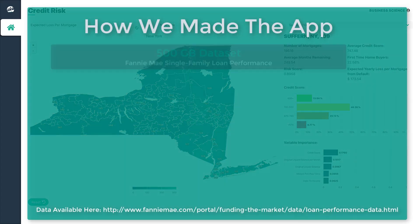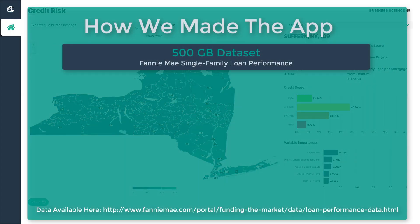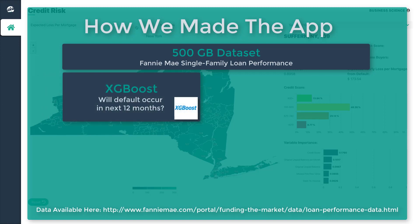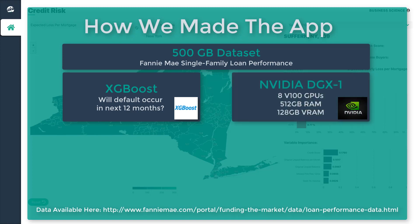Here's how we made the app. We downloaded the 500 gigabyte dataset from Fannie Mae's website. We used the XGBoost high-performance modeling algorithm to predict whether or not default would occur in the next 12 months. To scale to the large dataset, we used an NVIDIA DGX1 supercomputer with eight V100 GPUs and 512 gigabytes of RAM to train the model.